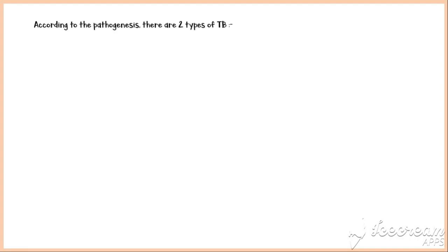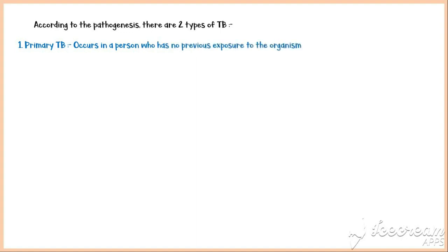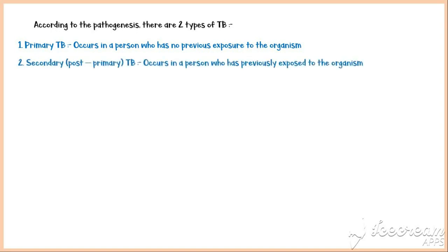According to the pathogenesis, there are two types of tuberculosis. Primary tuberculosis occurs in a person who has no previous exposure to the organism. And secondary, or post-primary TB, occurs in patients who have previously been exposed to the organism.